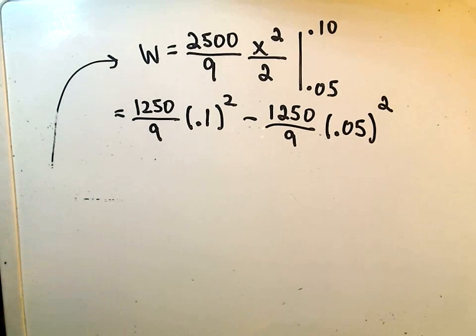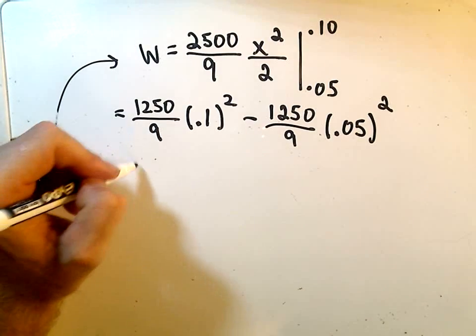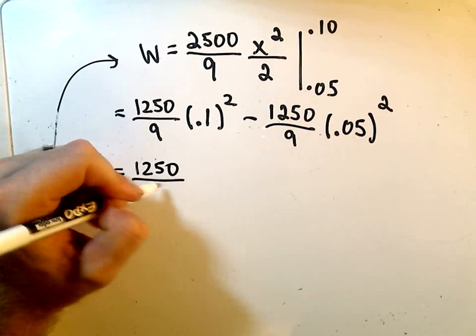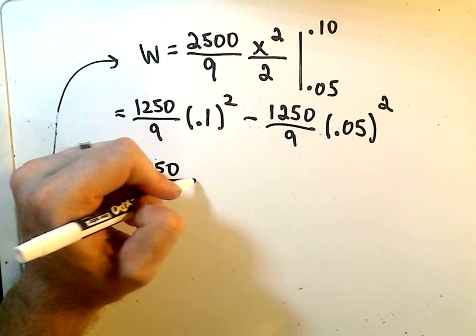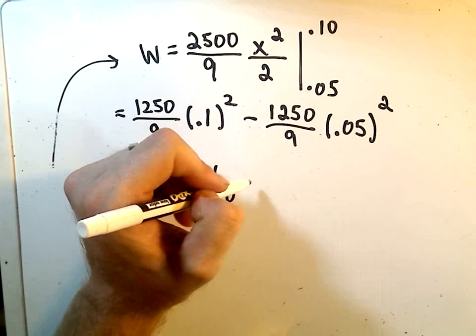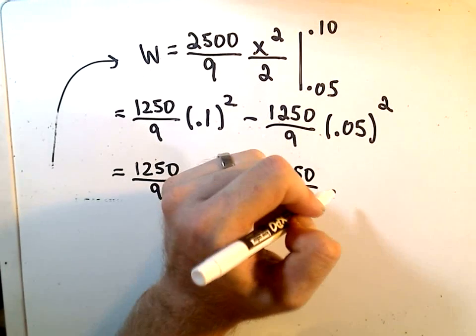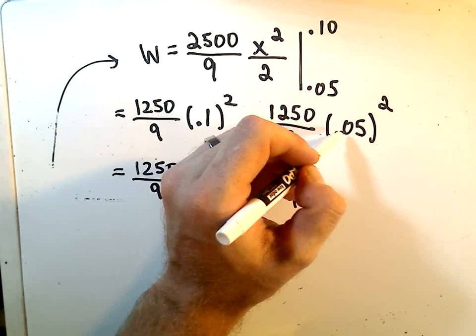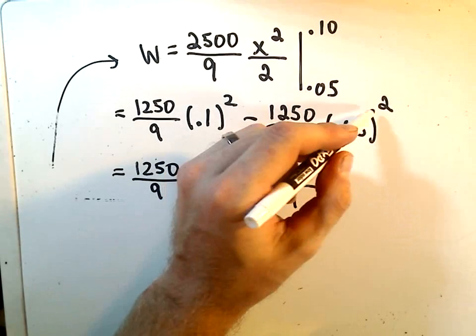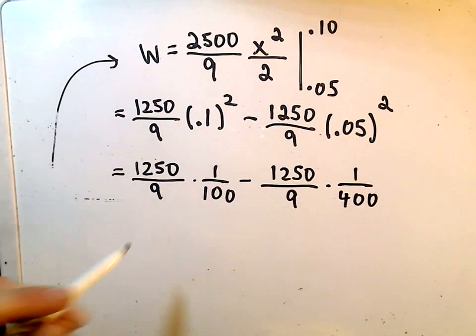You can get a calculator and check my arithmetic on this. At the end of the day, let's do one more step. So 0.1 is a tenth, so if you square that we'll get 1 over 100, minus 1250 over 9. If you simplify 0.05, that's going to be 1 over 20. If you square that, you'll get 1 over 400. You can check my arithmetic.